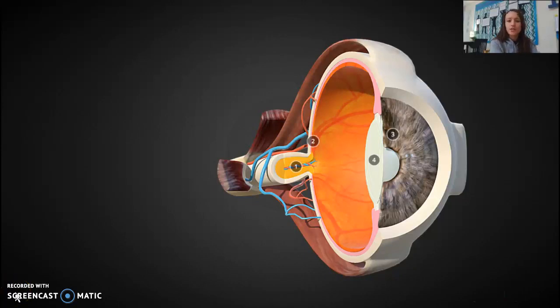In this video you're going to learn about the parts of the eye and how light moves through the eye into the brain and how we process that image.